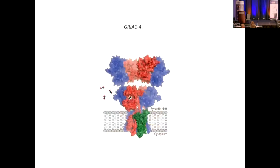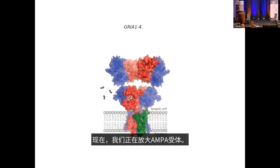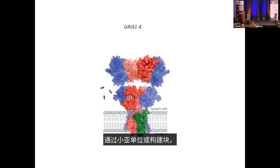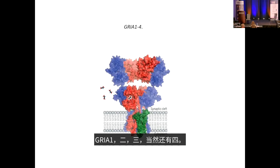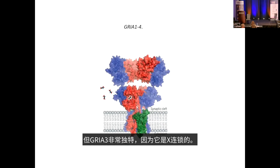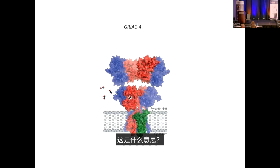Zooming into the AMPA receptor: it is built from subunits encoded by four GRIA genes — GRIA1, GRIA2, GRIA3, and GRIA4. GRIA3 is unique because it is X-linked. In X-linked disorders, females are typically carriers with two X chromosomes, while males — with only one X chromosome — are more severely affected.